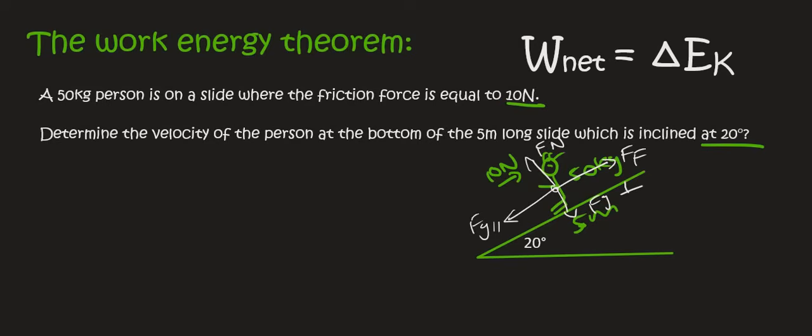The ones that we are interested in are the ones that are in the direction of motion, and so those are fg parallel and force of friction. So it says that determine the velocity of the person, so we can use the W net equals to change in EK.